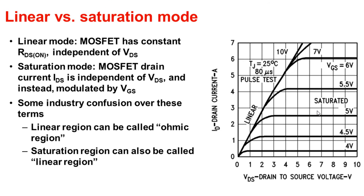This gets a little confusing because these are textbook definitions of linear and saturation region. Sometimes the ohmic region is called the linear region — the mentality being it's a straight line. When you hear people talk about hot swap applications, they will say they're operating in the linear region, which is technically incorrect. We just want to be careful that we understand what we're talking about when we mention the saturation region throughout the remainder of this video.